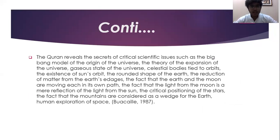The Quran reveals the secrets of critical scientific issues such as the Big Bang model of the origin of the universe, the theory of expansion of the universe, the gaseous state of the universe, celestial bodies tied to orbits, the existence of the sun's orbit, the rounded shape of the earth, the reduction of matter from the earth's edges, the fact that the earth and the moon are moving each in its own path, the fact that the light from the moon is a mere reflection of the light from the sun, the critical positioning of the stars, and the fact that the mountains are considered as pegs of the earth.